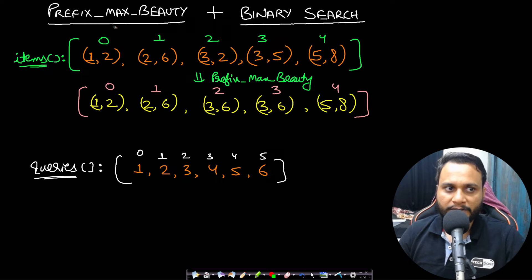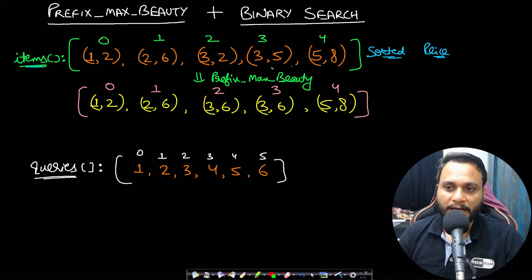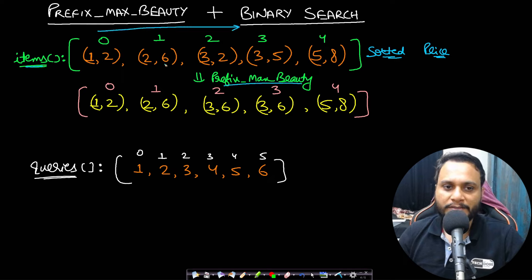We will solve this using prefix max beauty plus binary search. We take the items array, sort it by price, and this is our sorted items array where the first value is price and the second is beauty. We then calculate the prefix max beauty by iterating left to right, maintaining the max beauty seen so far: 2, 6, 6, 6, 8.